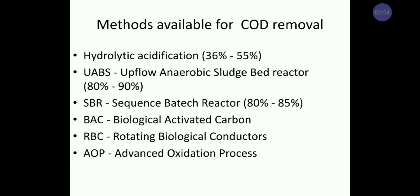These methods include hydrolytic acidification, which can reduce the COD level by 36% to 55%, and UASB — that means Upflow Anaerobic Sludge Blanket reactor — which can reduce COD by 80 to 90%, and SBR — Sequencing Batch Reactor — which can reduce the COD level by 80 to 85%.